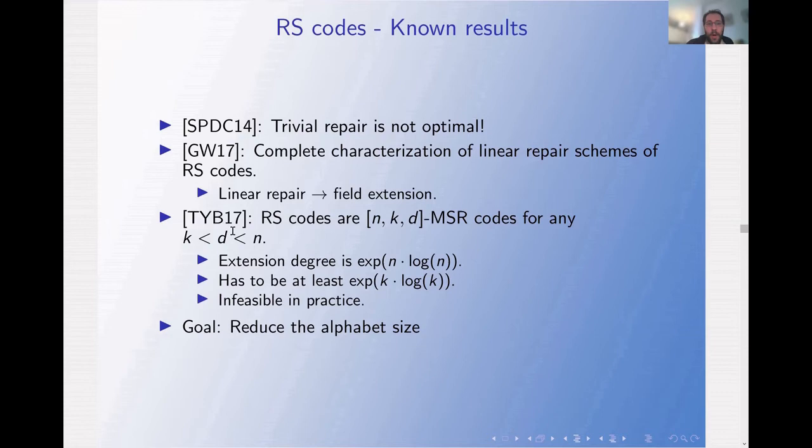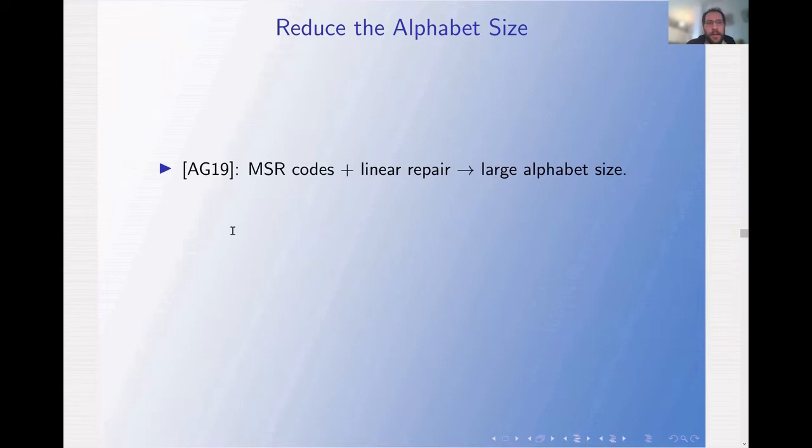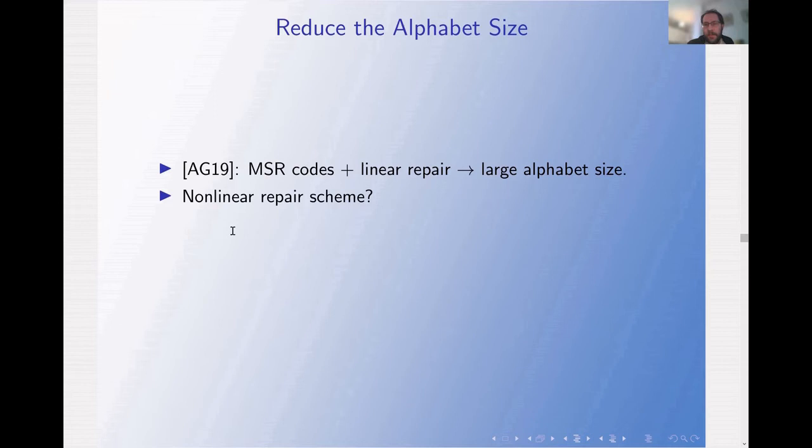Tamo and Barak proved an almost matching lower bound stating the extension degree must be at least exponential in K log K, meaning the finite field must be of order 2^(K^K). This is infeasible in practice, so the goal becomes reducing the alphabet size. Al Rabia and Guruswami showed that any MSR code — not just Reed-Solomon — with a linear repair scheme must have large alphabet size.